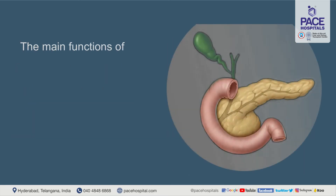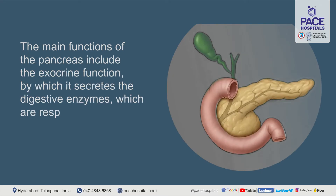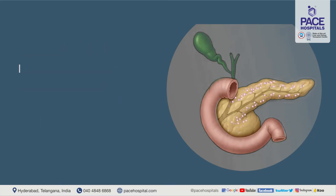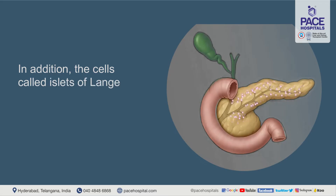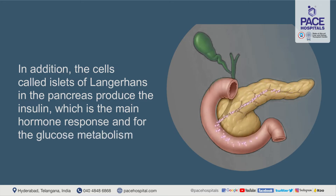The main functions of the pancreas include the exocrine function, by which it secretes digestive enzymes responsible especially for digestion of fats, but also sugars and proteins. In addition, the cells called islets of Langerhans in the pancreas produce insulin, which is the main hormone responsible for glucose metabolism.